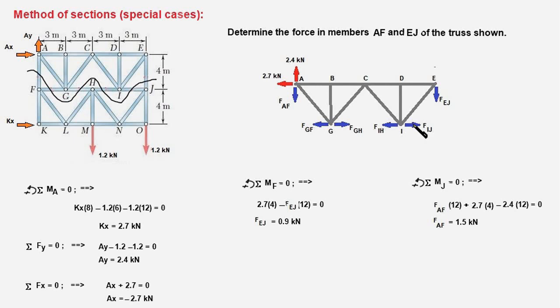And as you know our idea is to write an equilibrium equation, in particular a moment equation, so that the moment equation will have a single unknown. And if you notice carefully these two forces meet at point F, and F IJ and F EJ meet at point J.